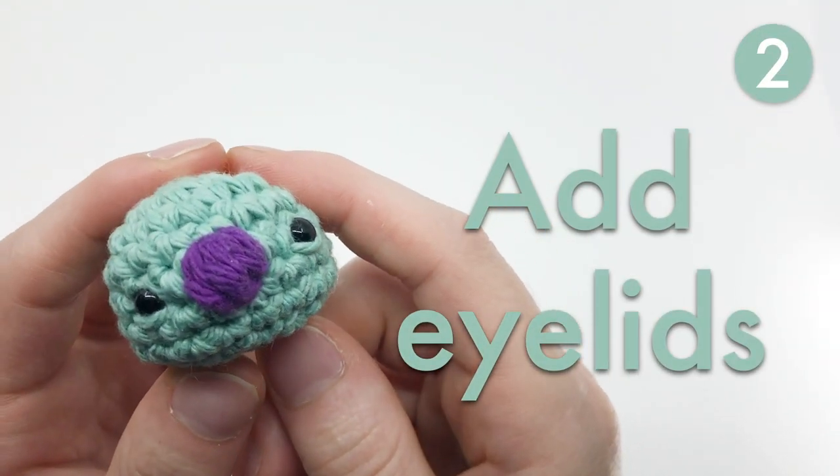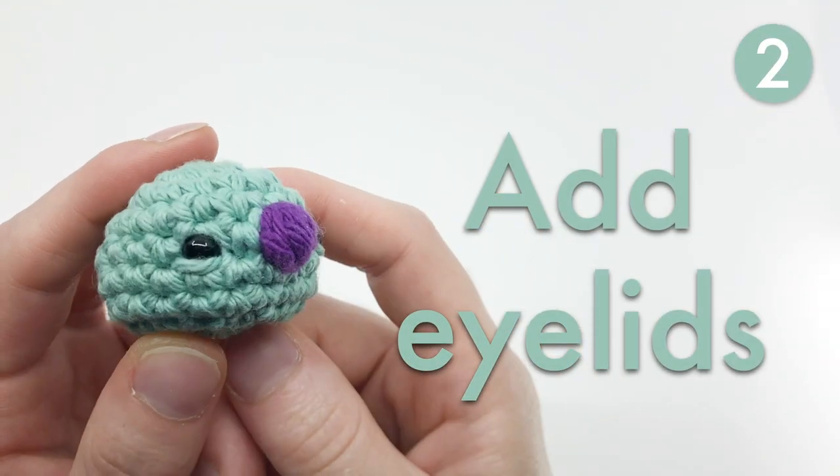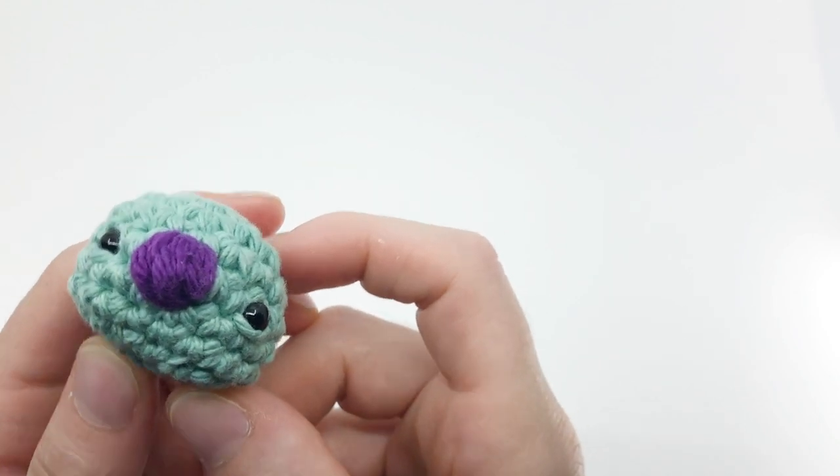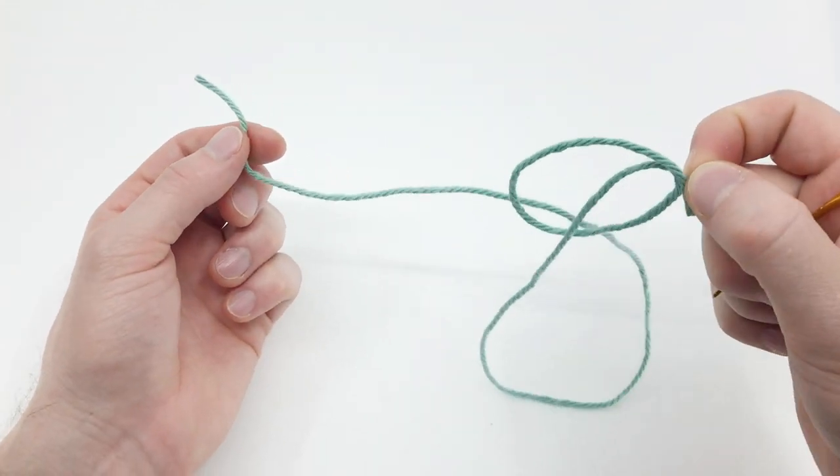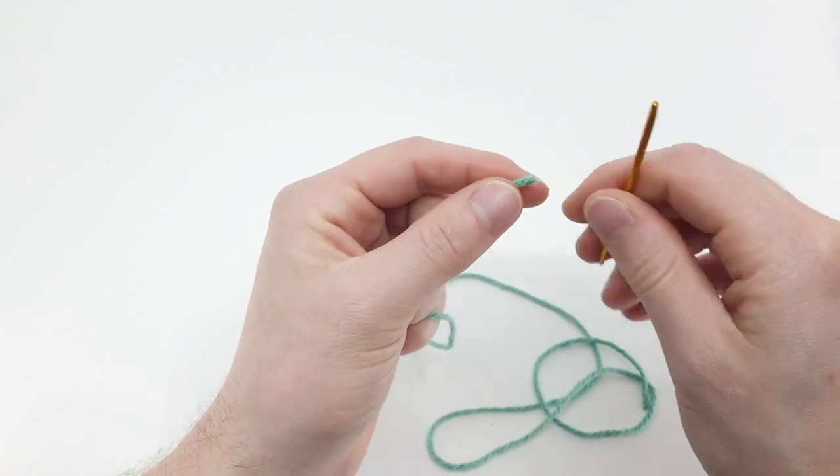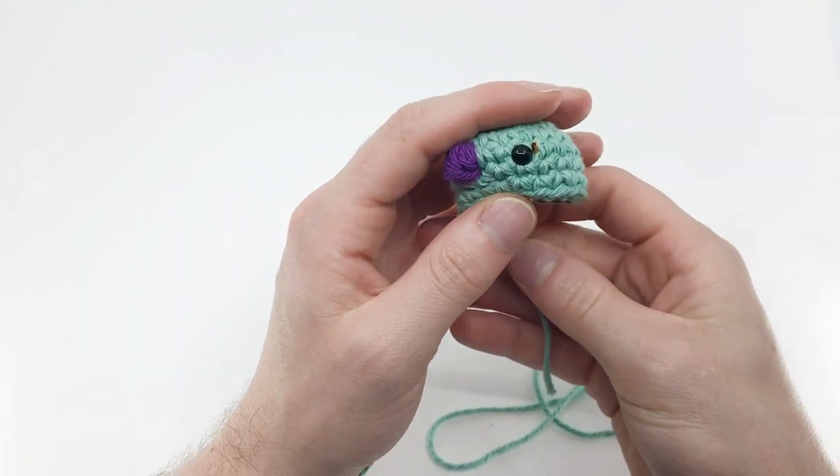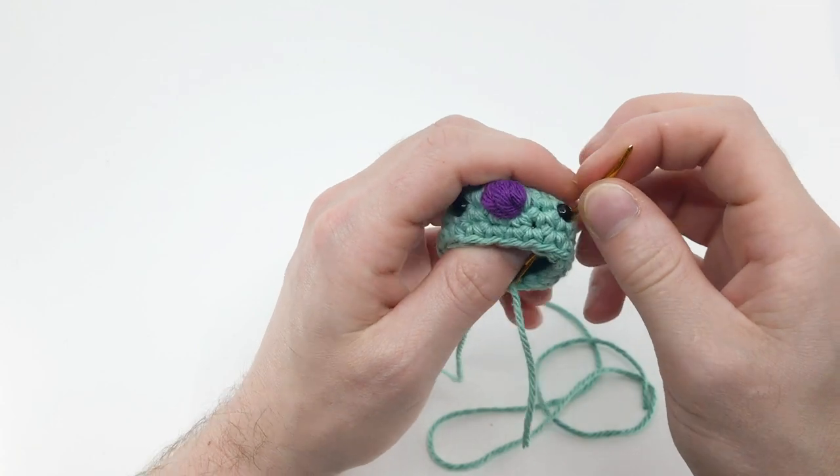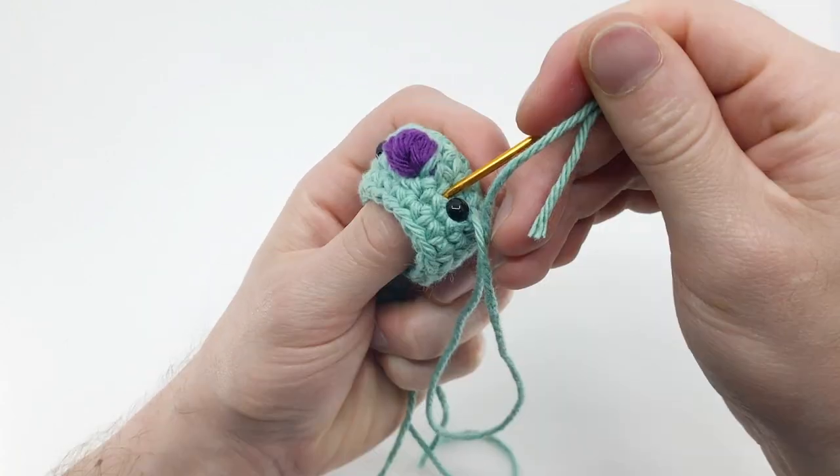Number two: Add eyelids. This is my favorite and most used way to customize safety eyes. Use an extra strand of yarn in the same color as your character threaded on a needle. Go around the back of the eye and double knot the two ends together on the inside.